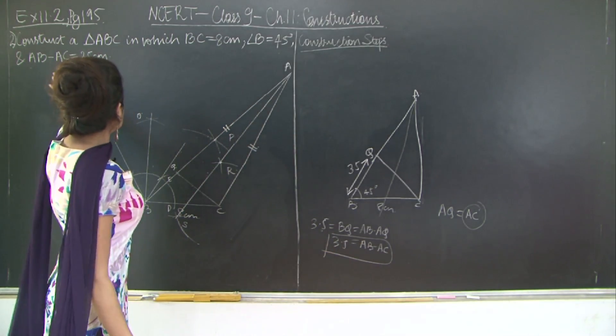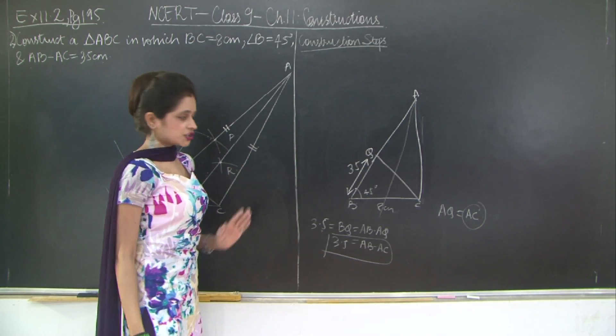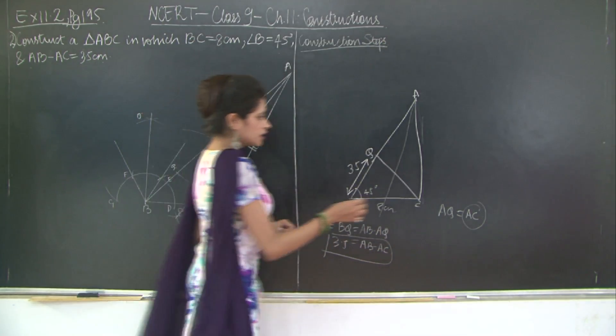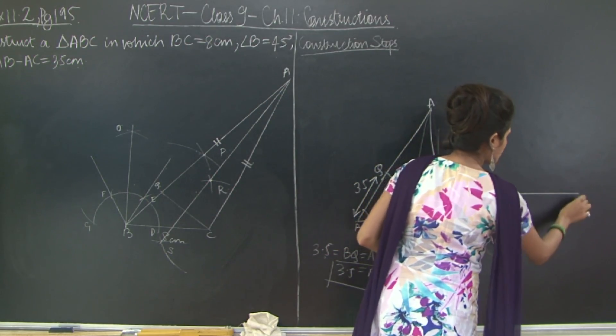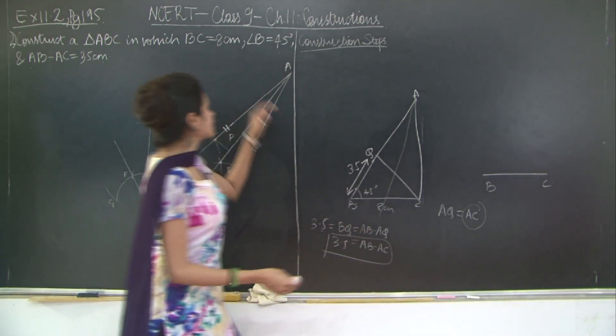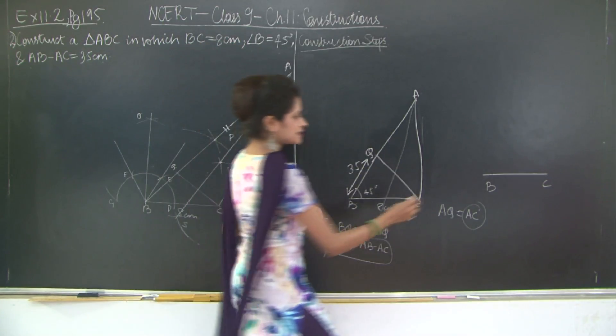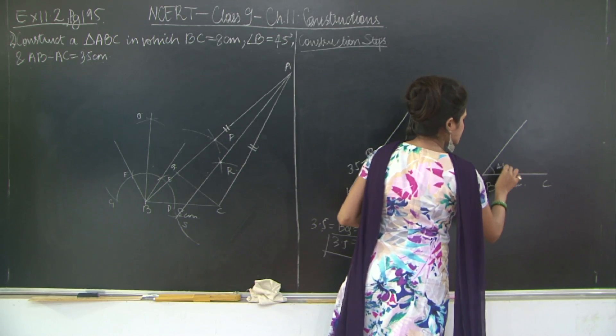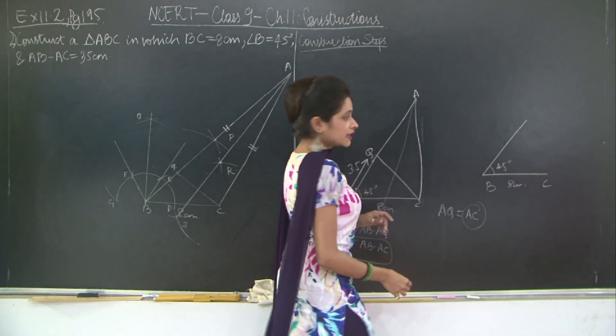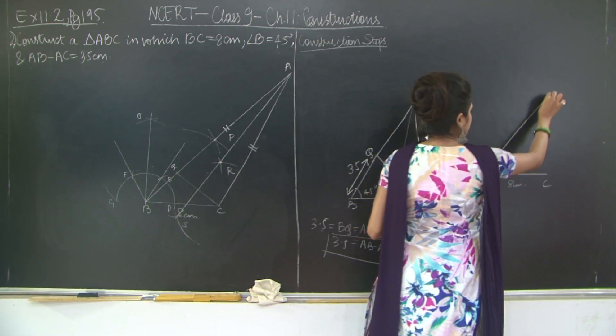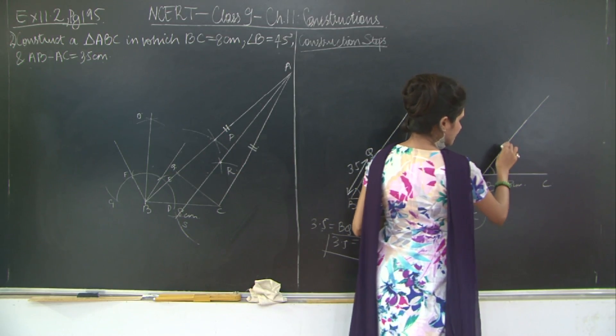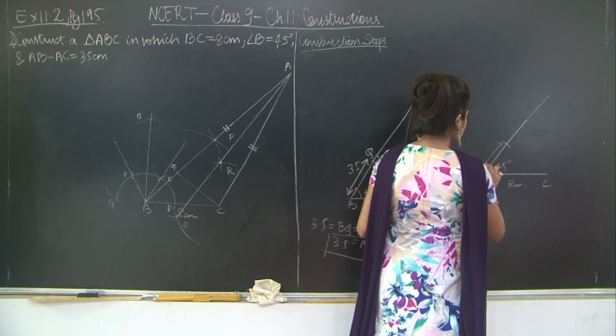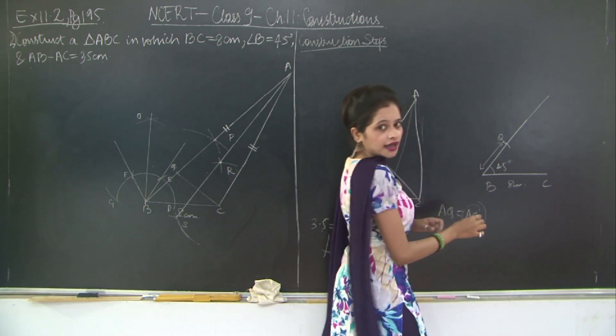So this is AB minus AC is 3.5 cm. So what did we exactly do? We first took a base BC of the given length. What was the given length out here? 8 cm. Then we drew an angle of 45 degrees. Once this angle was drawn, we cut an arc of 3.5 cm here. So this length was 3.5 cm. We call this length BQ.